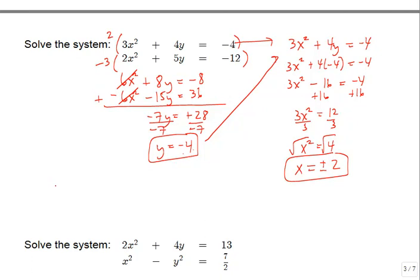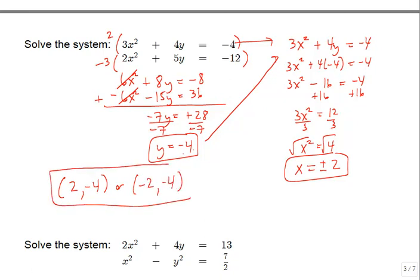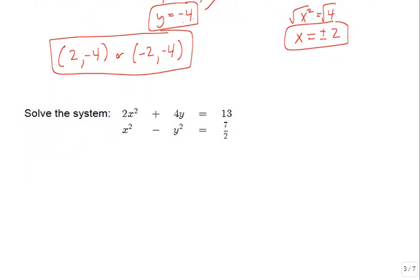We get two x values for this y value of negative 4. The solutions are: when x is positive 2, y is negative 4; or when x is negative 2, y is negative 4. Both are solution points, meaning these two parabolas, if we were to graph them, must intersect at these two points.